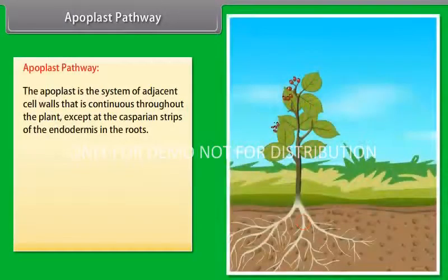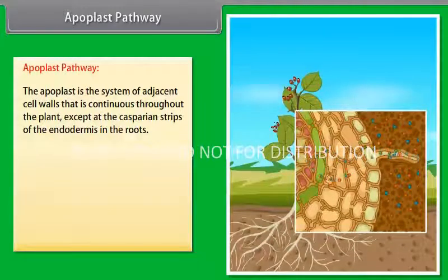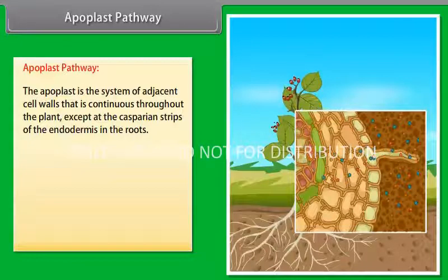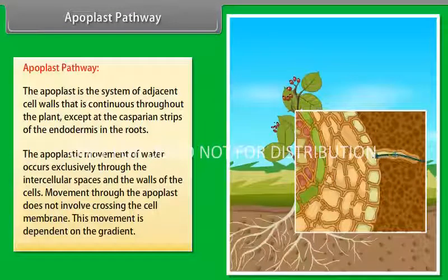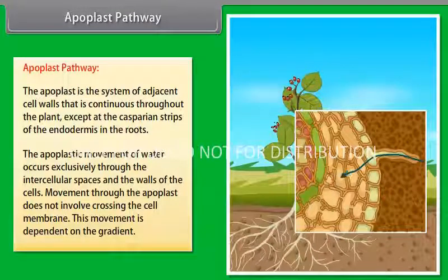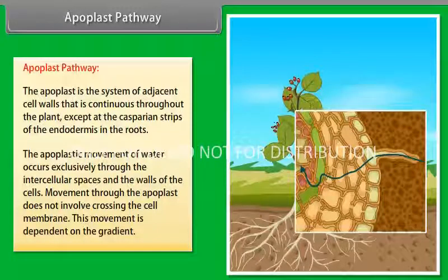Apoplast pathway. The apoplast is the system of adjacent cell walls that is continuous throughout the plant, except at the Casparian strips of the endodermis in the roots. The apoplast movement of water occurs exclusively through the intercellular spaces and the walls of the cells. The movement through the apoplast does not involve crossing the cell membrane. This movement is dependent on the gradient.